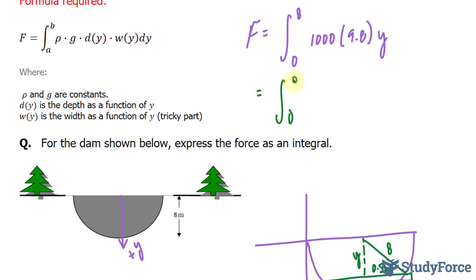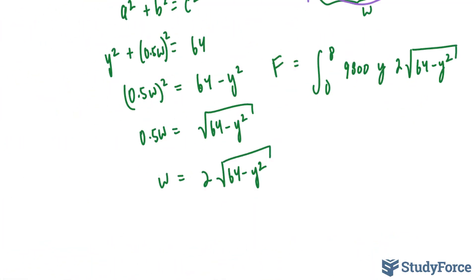The integral between 0 and 8, 9,800y, I just multiplied these two, and our function was 2 times the square root of 64 minus y squared. And don't forget to include dy at the end. My next step is to take out 9,800 times 2 outside of this expression.